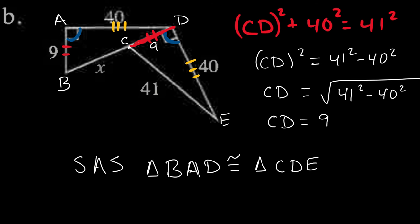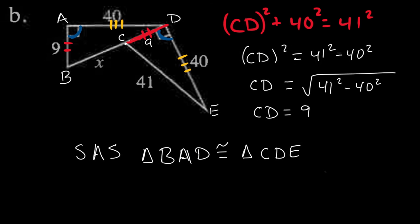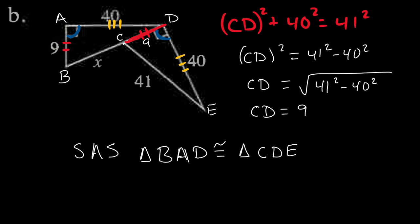Now I need to figure out the value of x. Since BD and CE are both hypotenuses of those triangles, they have to be congruent to each other also. BD is x + 9, and that has to equal CE, which is 41. So x + 9 = 41. Subtracting 9 from both sides: x = 32.